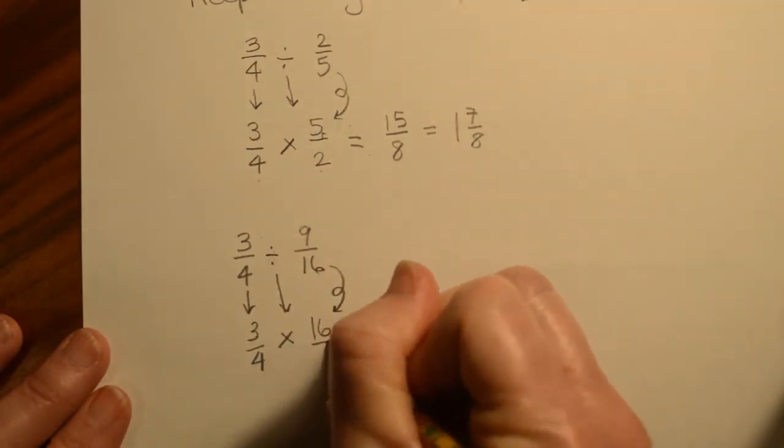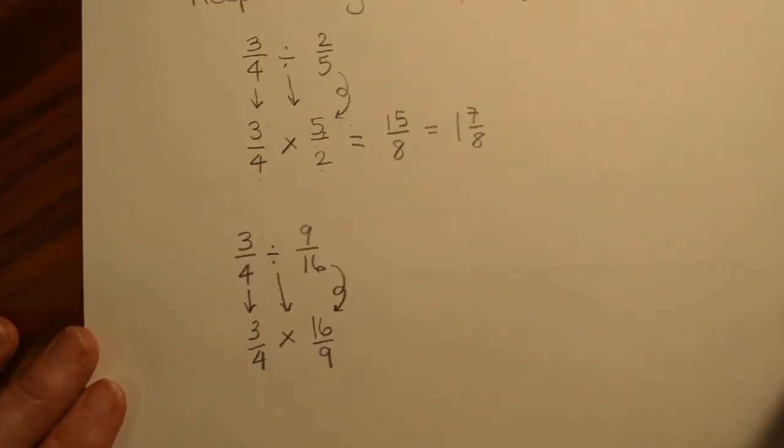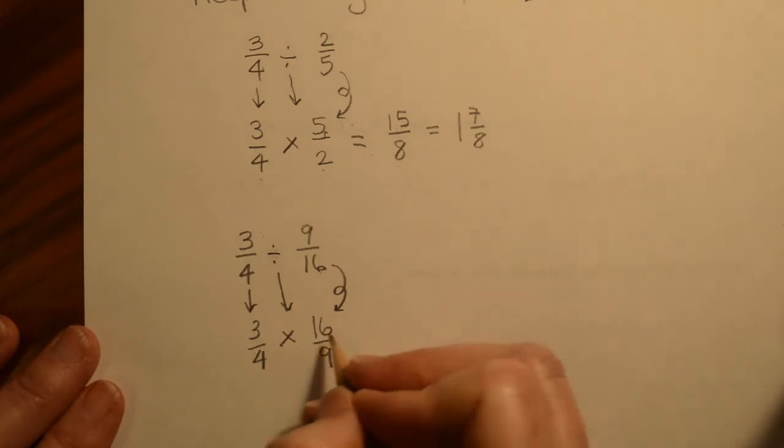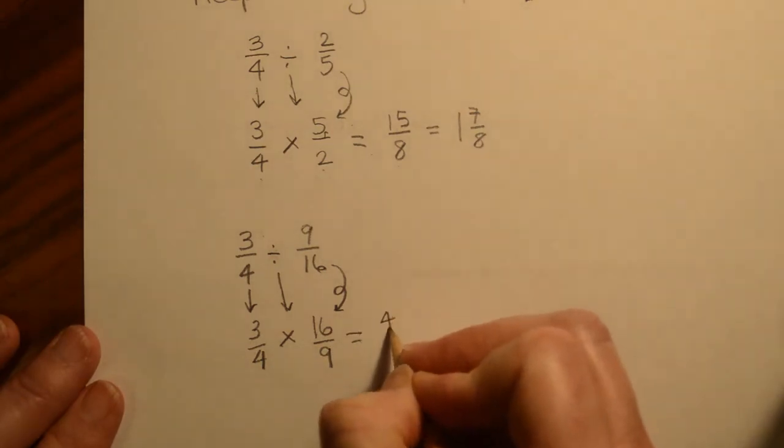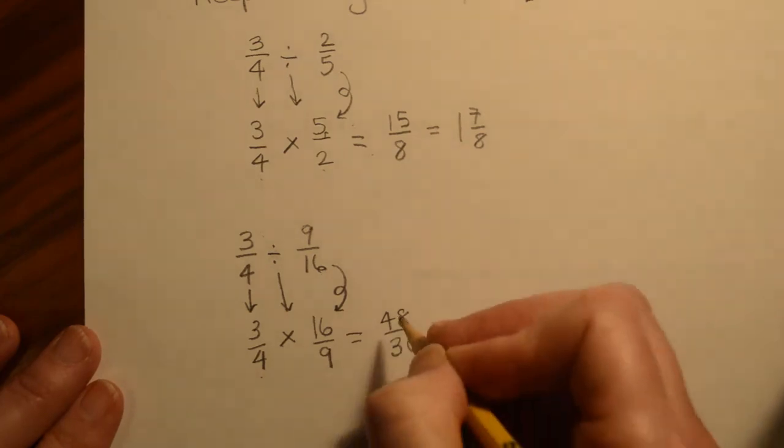So this is going to become 16/9. Now again, we've talked about multiplying across. You could just do 3 times 16 is 48. 9 times 4 is 36. And then reduce.